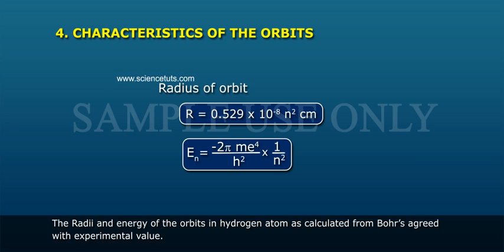Radius of orbit: R is equal to 0.529 into 10 to the power of minus 8 n square cm. En is equal to minus 2 pi me to the power of 4 by h square into 1 by n square.